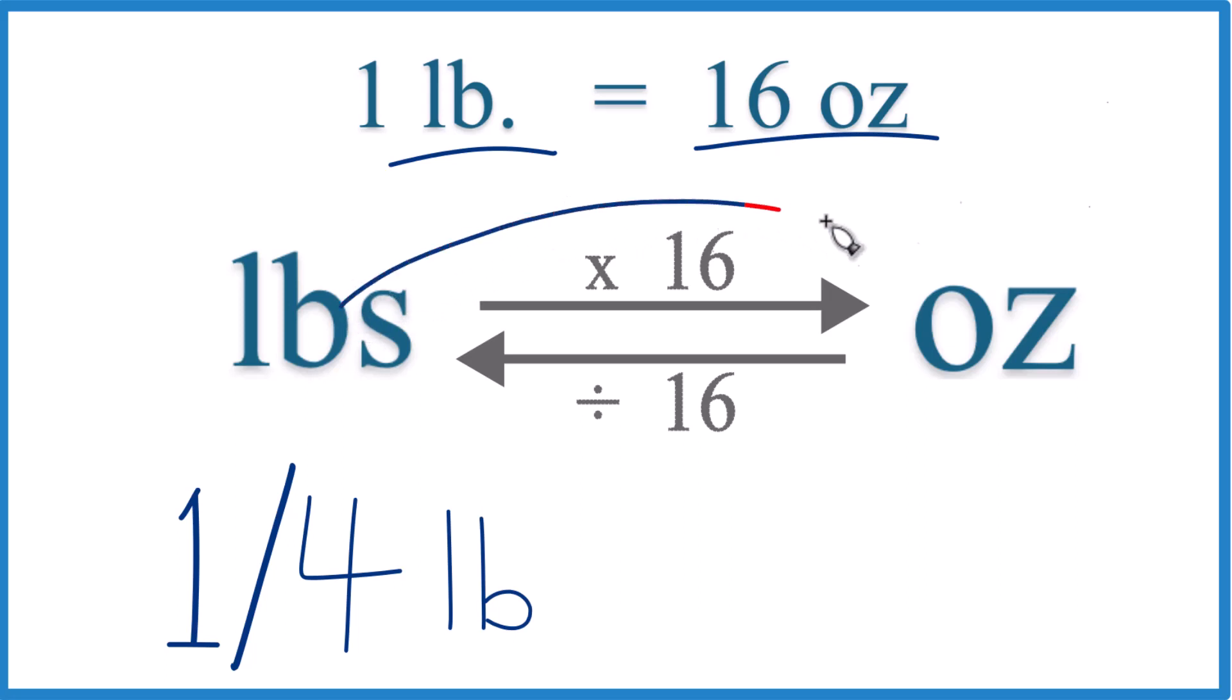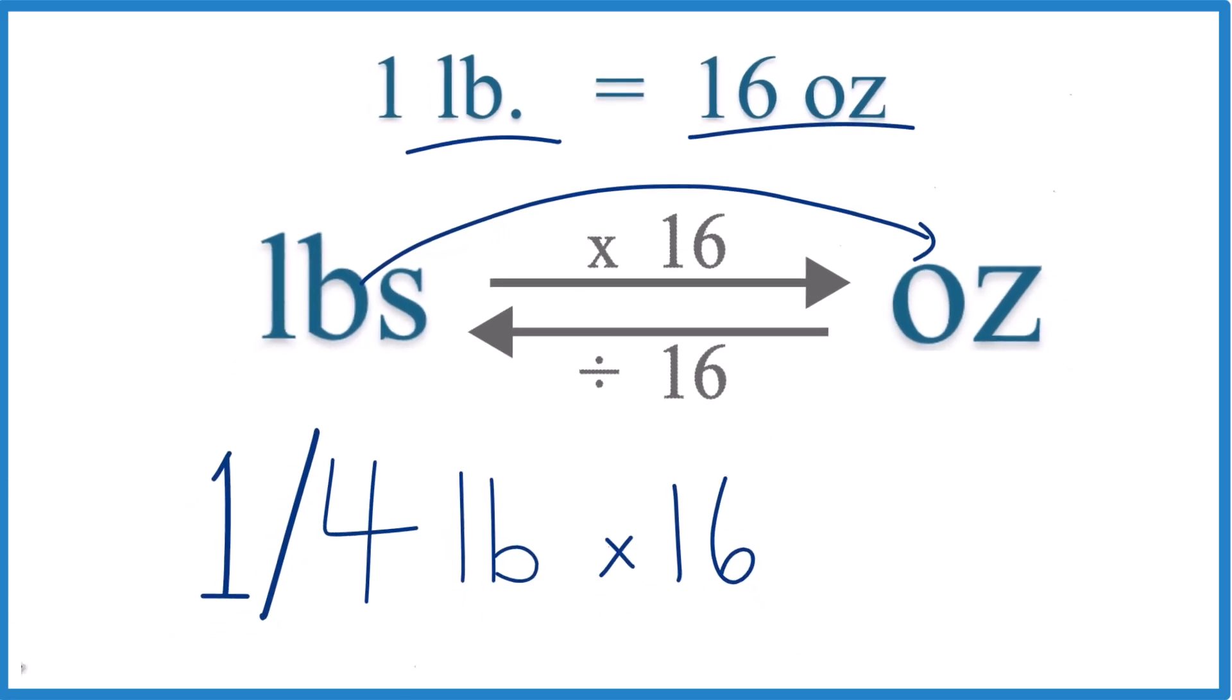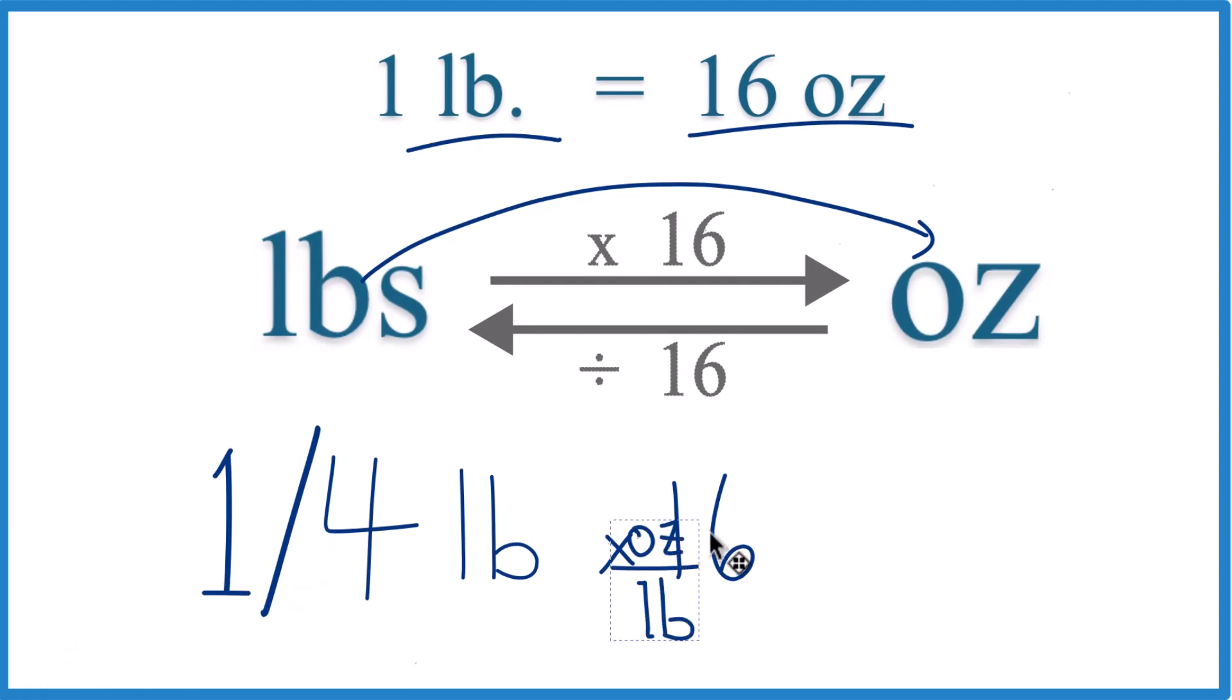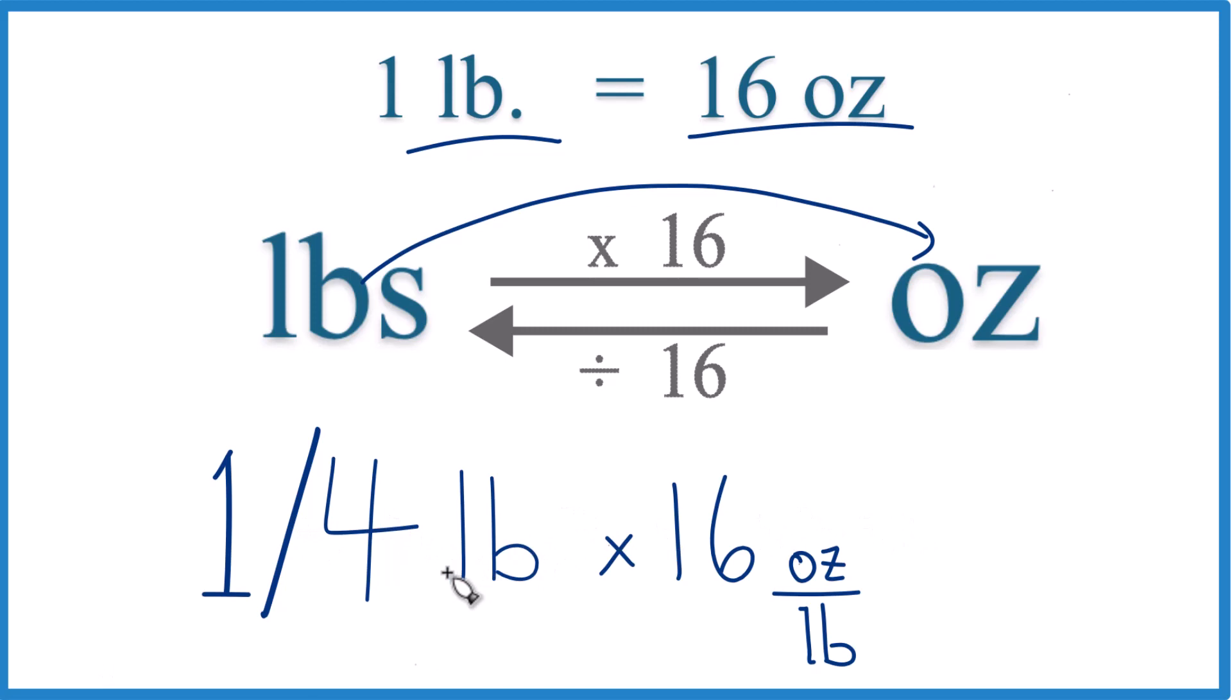So if we're going from pounds to ounces here, we're going to multiply by 16. And that 16, the units for that are ounces per pound, because we said there's 16 ounces in one pound. This way, when we multiply, we have pounds on the top and the bottom. They're going to cancel out.